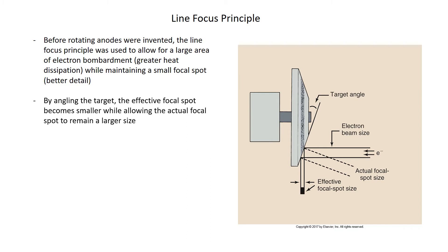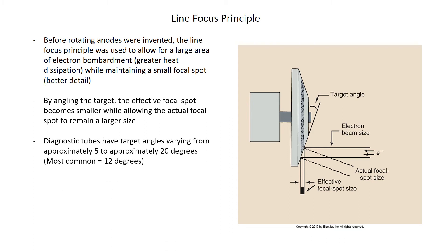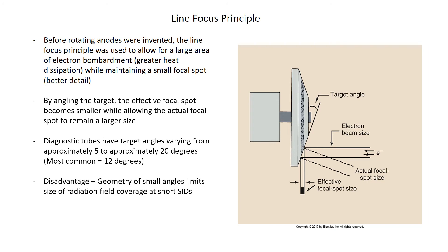By angling the target, the effective focal spot becomes smaller while the actual focal spot remains larger. Diagnostic tubes have target angles varying from about 5 to approximately 20 degrees, with the most common being about 12 degrees, though there is variance depending on the author. The disadvantage is that the geometry of small angles limits the size of the radiation field coverage at very short SIDs, which is why you can't angle too much.